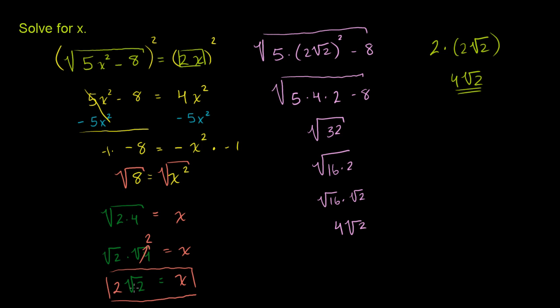So when x is equal to 2√2, the left-hand side equals 4√2. And remember, the left-hand side looked like this when we started off. So when you substitute this back into the left-hand side, you get 4√2. When you substitute it back into the original right-hand side, you get 4√2. So it's definitely the right solution.